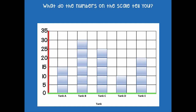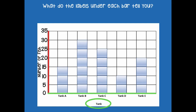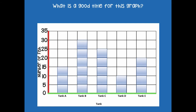What do the numbers on the scale tell you? They tell us the number of fish, so you want to label that side so anyone looking at this graph knows those numbers represent the number of fish. What do the labels under each bar tell you? They tell us the tank — that's already labeled for us. A good title for this graph would be something like 'Number of Fish at Sal's Pet Store.' Make sure you have your labels and title on your graph.